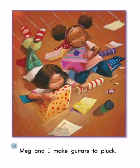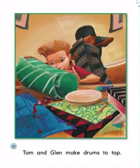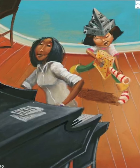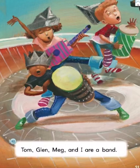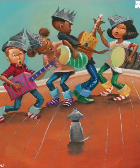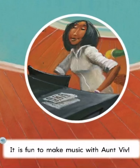Meg and I make guitars to pluck. Tom and Glenn make drums to tap. Tom, Glenn, Meg and I are a band. It is fun to make music with aunt Viv.